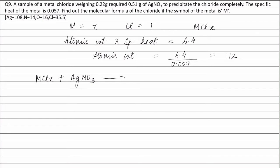Now, weight of metal chloride is 0.22 gram. Therefore, moles of metal chloride is weight divided by molecular weight: 0.22 divided by 112 plus X into 35.5.